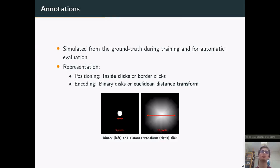And we found out, as reported in the paper, that inside clicks with Euclidean distance transforms seems to be the most efficient retention to make the most of the annotations.